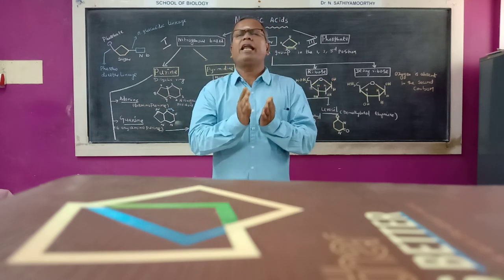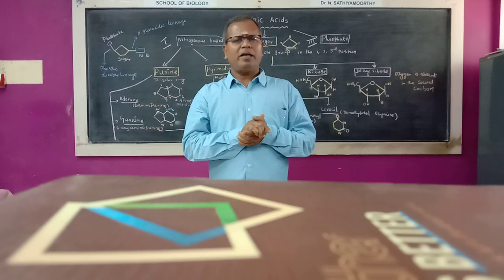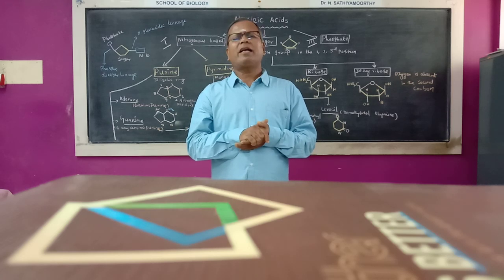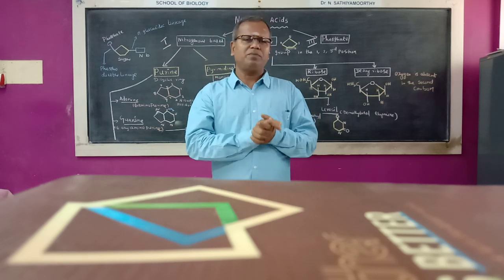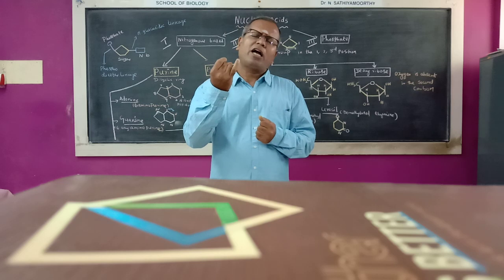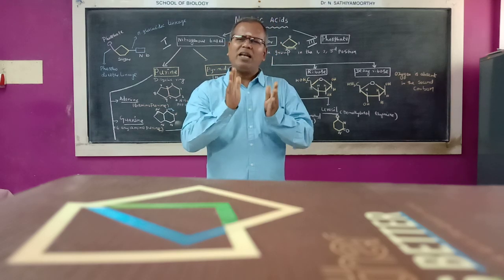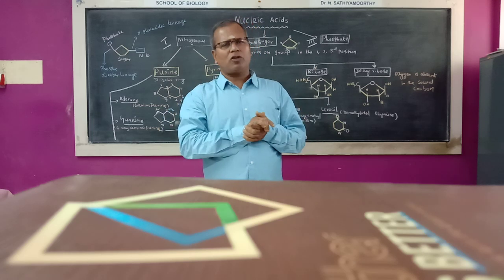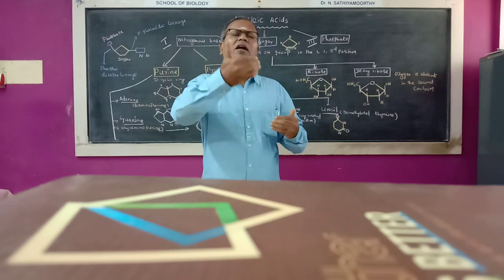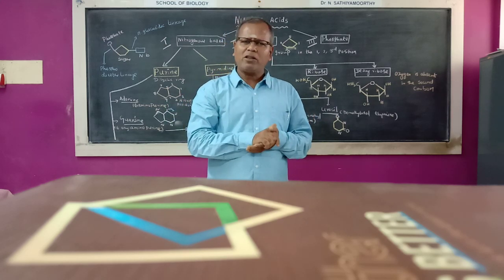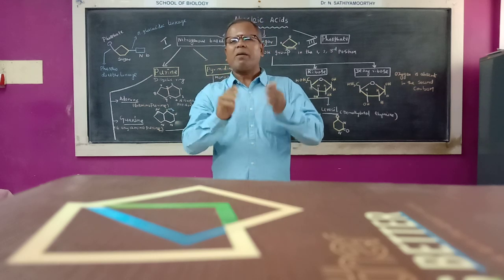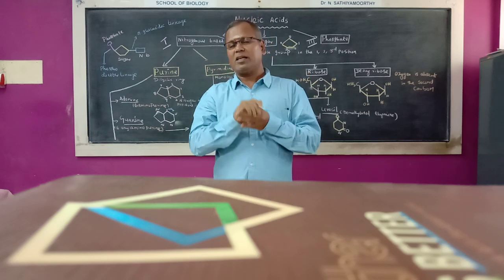DNA and RNA are present in the form of chromatin. DNA controls all the metabolic activities of the cells and also controls protein synthesis, making it very important in other organisms.